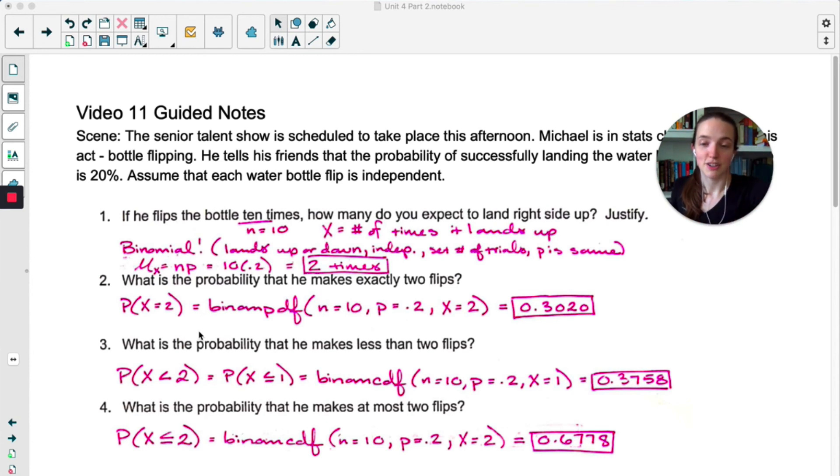What's the probability that he makes exactly two flips? I just did binompdf, so we have 10 trials. Probability of success is 0.2. X is 2. 30% chance. Probability that he makes less than two flips. This would be the same as X less than or equal to 1, because notice this problem just says less than, not less than or equal to. So I did binomcdf, and I put in 1 for X. And then what's the probability that he makes at most two flips would be less than or equal to 2. So this includes 2. I did binomcdf, but this time I put in 2. So far, this is all a binomial review.